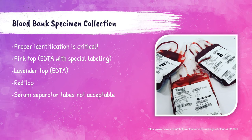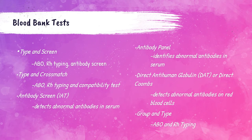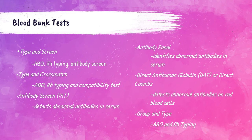The blood bank performs a type and screen, which determines the patient's ABO and Rh blood type and tests plasma for clinically significant antibodies that may cause a transfusion reaction. The type and crossmatch is performed to determine the patient's ABO and Rh blood type and compatibility with donor blood. Antibody screens detect clinically significant antibodies that may cause transfusion reactions. Antibody panels are performed when a patient has a positive antibody screen, to determine the specific antibody present. A direct antihuman globulin test (DAT) detects abnormal antibodies on the patient's red blood cells. Group and type determines the patient's ABO and Rh blood type.